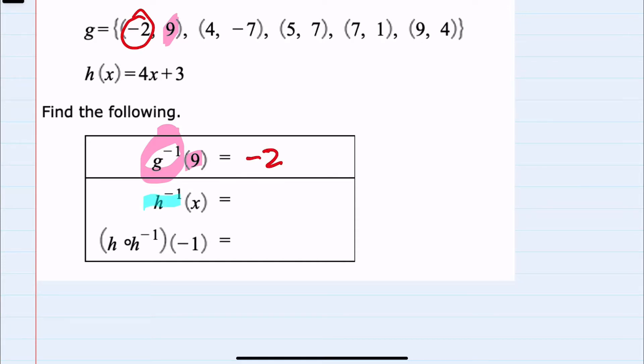Our next question is to find h inverse of x. Once we're given h of x is 4x plus 3, to find h inverse of x, we're going to first remember that h of x is our y. So h of x would be y equals 4x plus 3. So to find h inverse, I'm going to switch the y with an x, and I'm going to switch the x with the y.